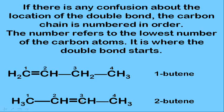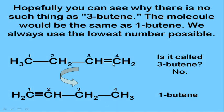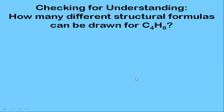You might wonder: is there a separate molecule called 3-butene? There is no such thing as 3-butene because we always use the lowest number possible. By flipping the molecule around, it becomes 1-butene, so the molecule 3-butene does not exist.